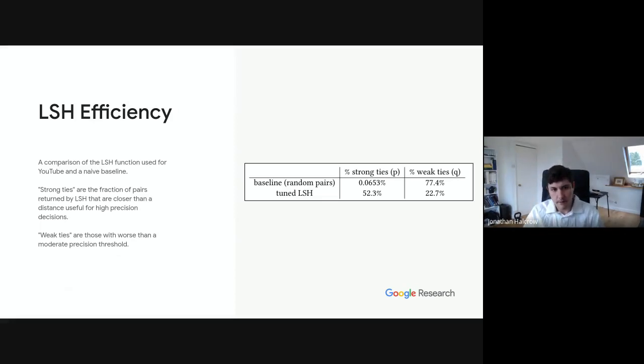To start with, I'll talk about the efficiency of the LSH function we've chosen. We evaluate the LSH function in two different ways. One is the percentage of pairs returned by LSH that are closer than a distance that we've decided is a threshold that has very high precision. We call those strong ties. The other is the percentage of pairs that we find which are below some moderate precision threshold. And we refer to these as weak ties. So in the LSH function case we've chosen here, this is just by doing parameter tuning over simple distance functions of individual features that are going into the model. We find that over half of the pairs that come out of our tuned LSH model are what we call strong ties, and less than a quarter of them are weak ties or worse.